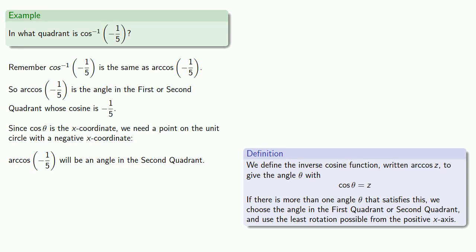For example, in what quadrant is the inverse cosine of negative one fifth? Remember, cosine to the negative one of negative one fifth is the same as arc cosine of negative one fifth. By our definition, this is the angle in the first or second quadrant whose cosine is negative one fifth. Since cosine of theta is the x-coordinate, we need a point on the unit circle with x-coordinate of negative one fifth. There are two such points, but arc cosine must return a first or second quadrant angle, so arc cosine of negative one fifth is an angle in the second quadrant.